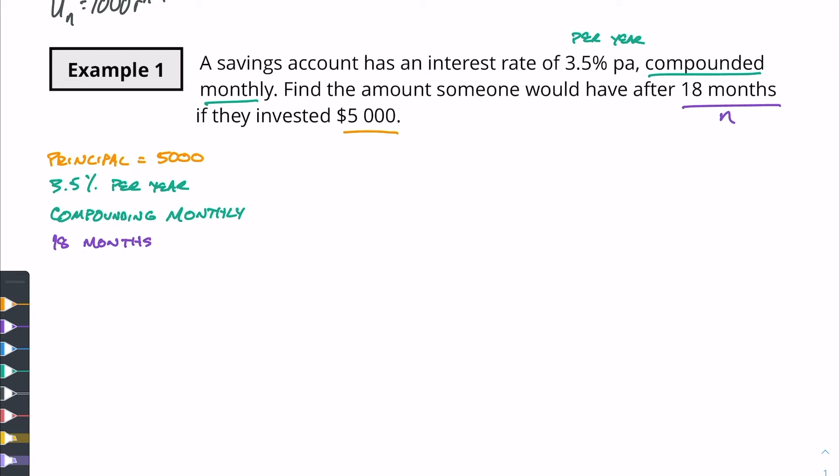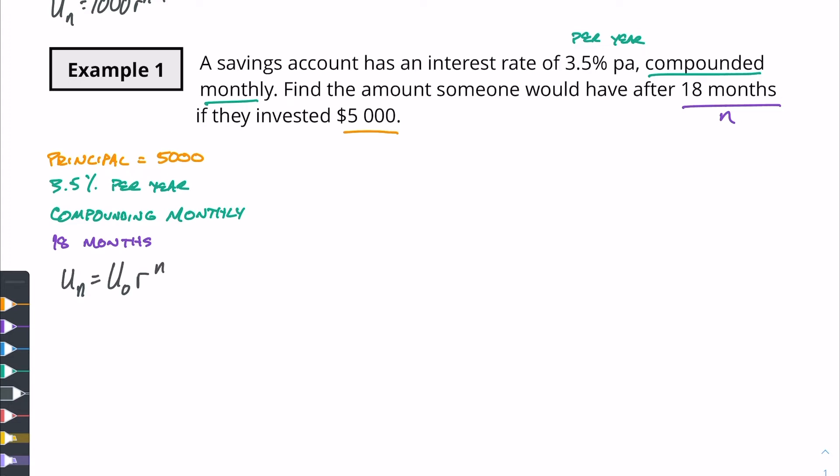All right so let's set this up using both formulas. So our first formula if we use our geometric sequence we've got u of n equals u of zero r to the n power. Okay so we have our formula. We have all of our information. Let's now calculate what this will be after 18 months.